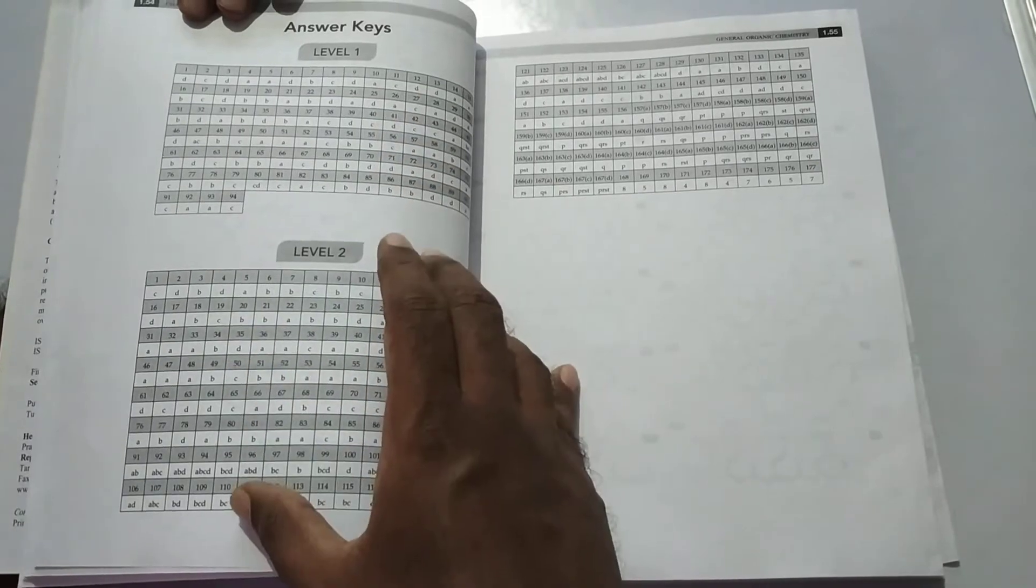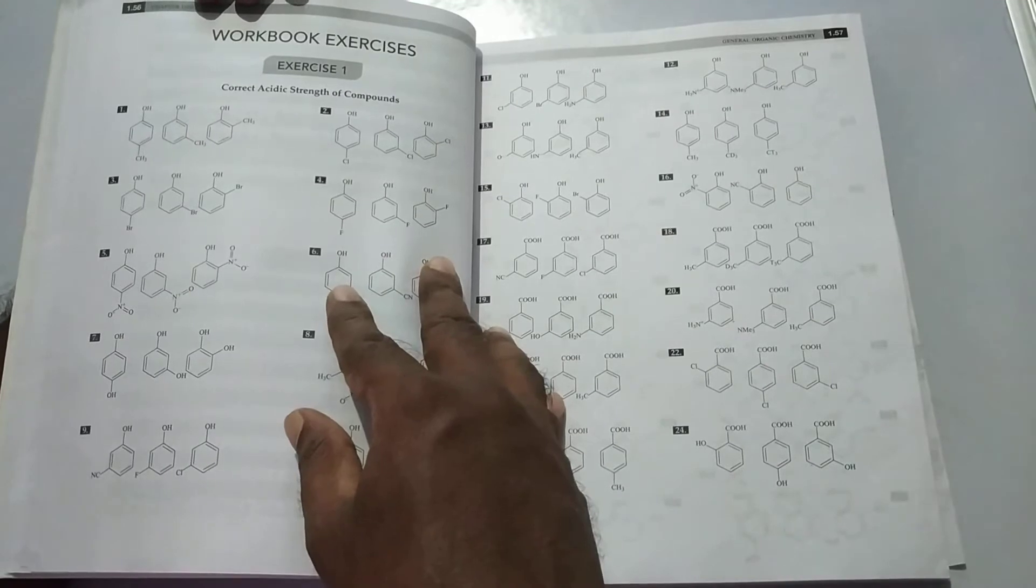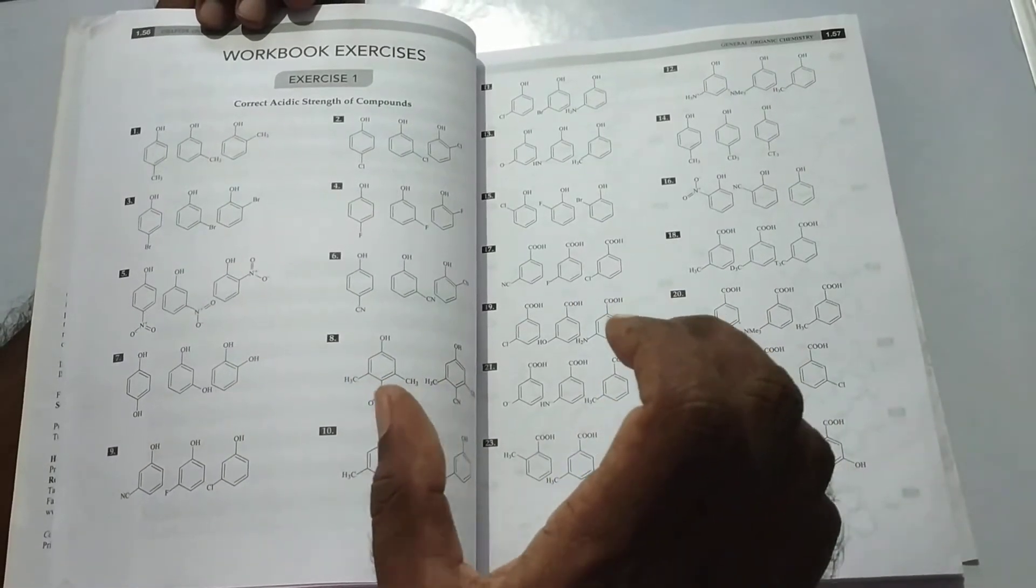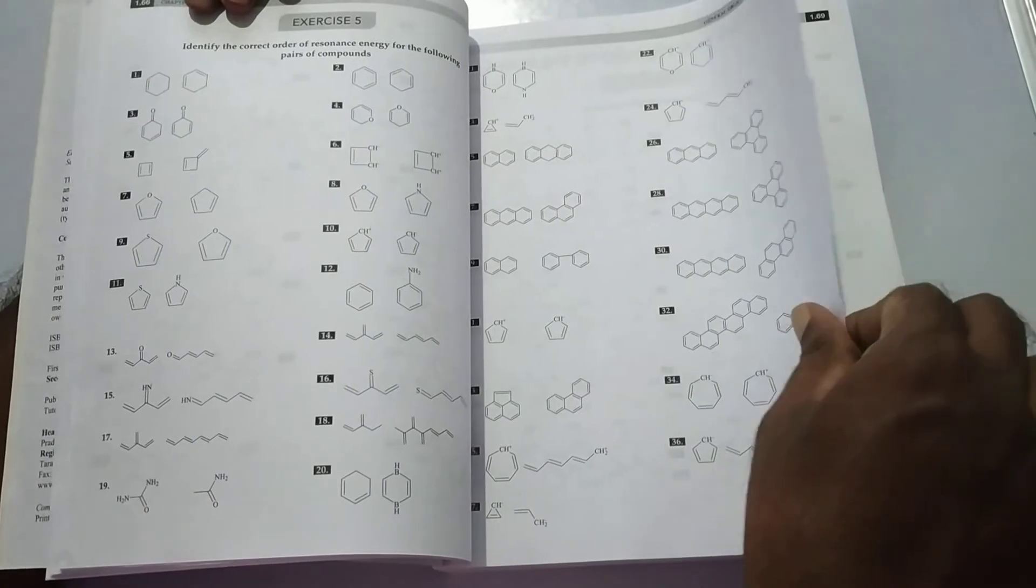Then Complication Type questions are also given. Also, it's very good - Matching Column is also given. Then Integer type is also given. That's very good. Then Answer Key is given at the end of every chapter. Wow, it's very good, it was amazing. Apart from other problem books, the workbook exercise is only given at the end of every chapter in this book only. Workbook exercise number 1, and also exercise 2, and also exercise 3, and also exercise 4, and also exercise 5. Then solution for workbook exercise is also given.